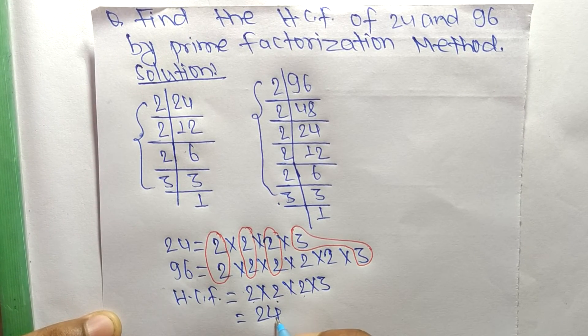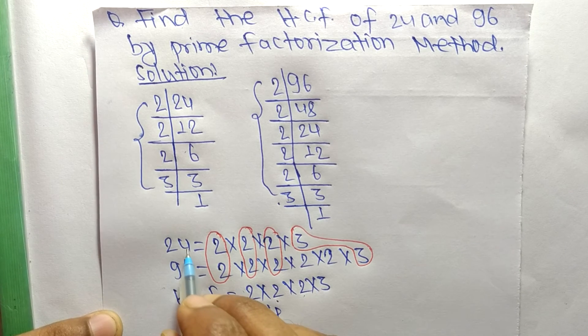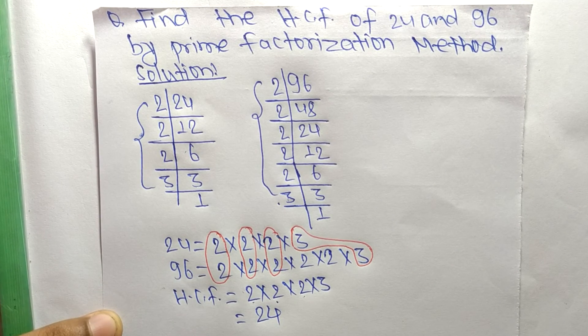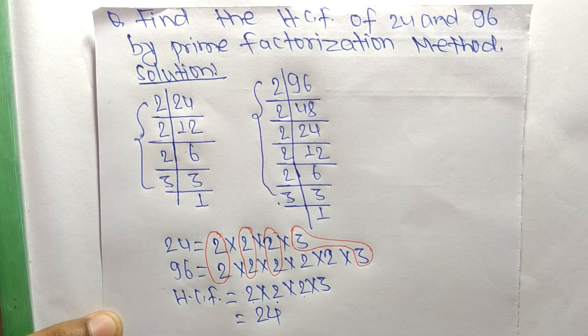So 24 is the HCF of 24 and 96. That's all for today. Thanks for watching.